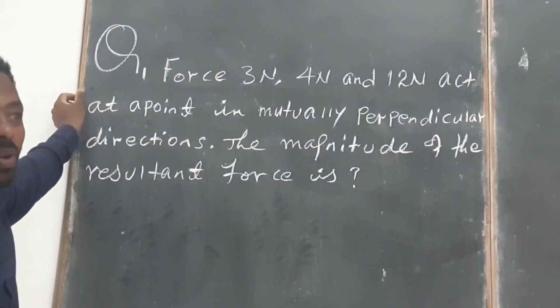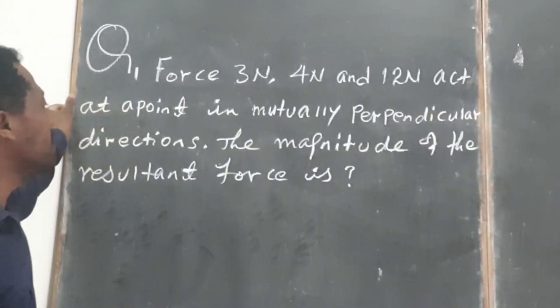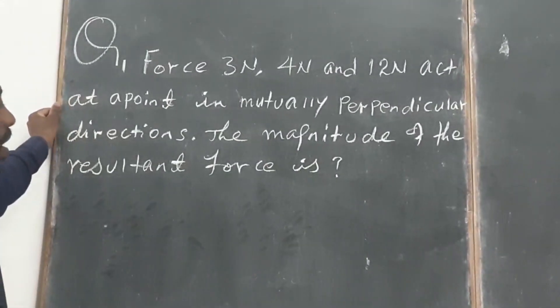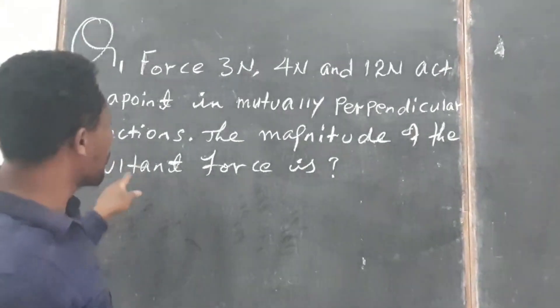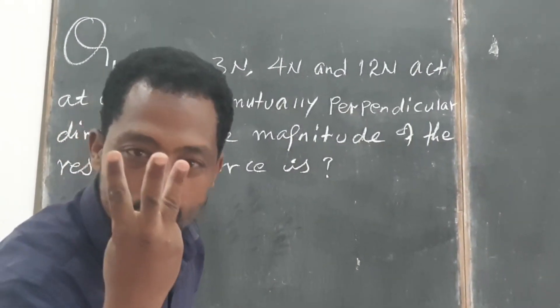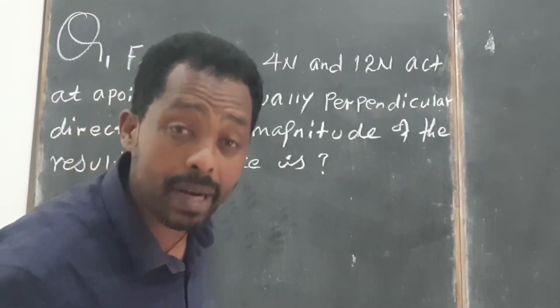Force 3 Newton, 4 Newton, and then 12 Newton act at a point in mutually perpendicular directions. Look, 3 Newton, 4 Newton, and then 12 Newton, they are mutually perpendicular.